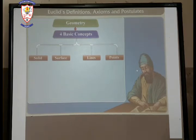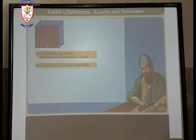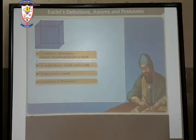Let's come to Euclid's definitions, axioms and postulates. Geometry mainly divided into four basic concepts: solid, surface, lines and points. A solid has three dimensions: length, breadth and height or depth. A surface has two dimensions: length and breadth. A line has only length, it is one dimension. A point has no dimension.